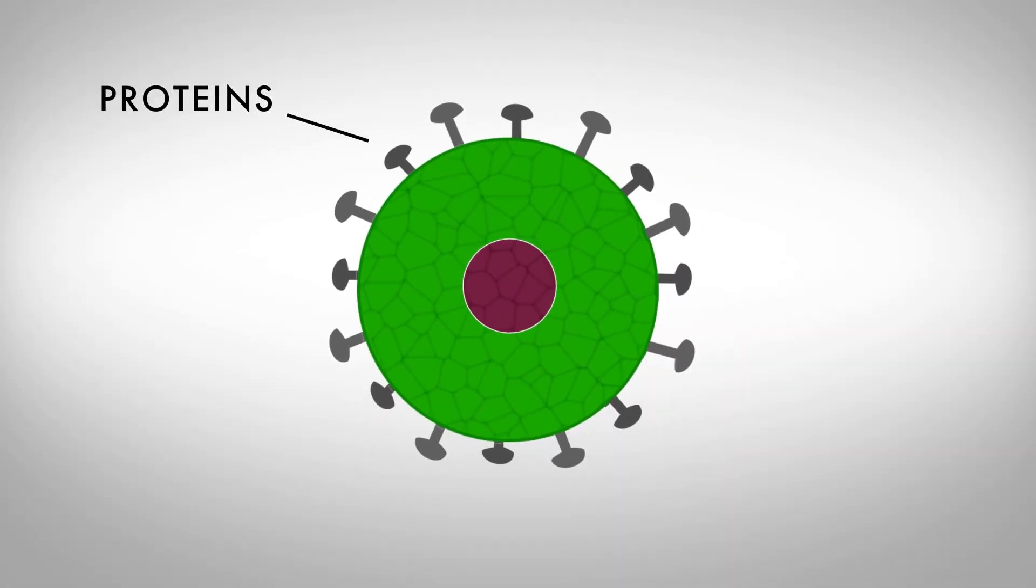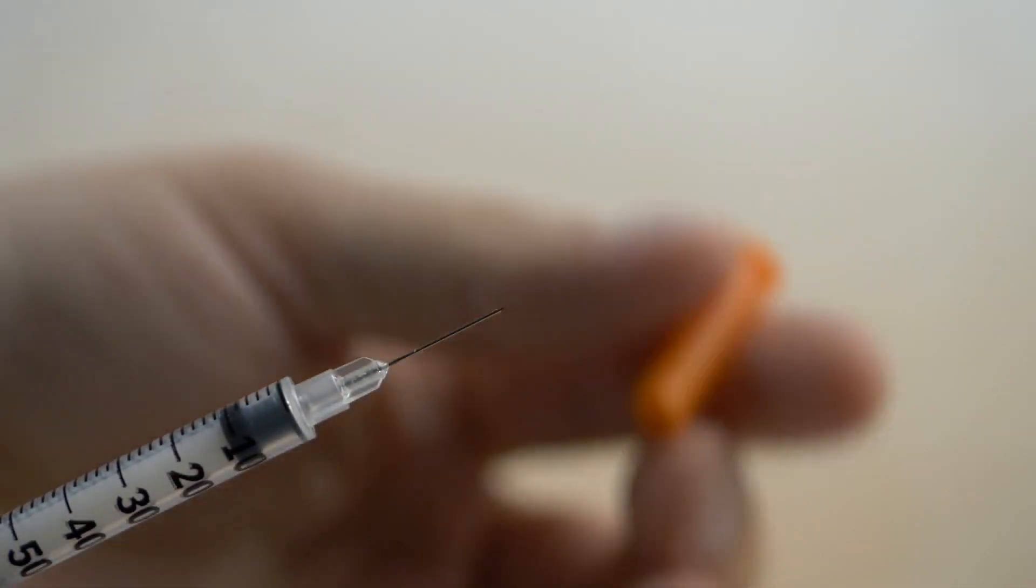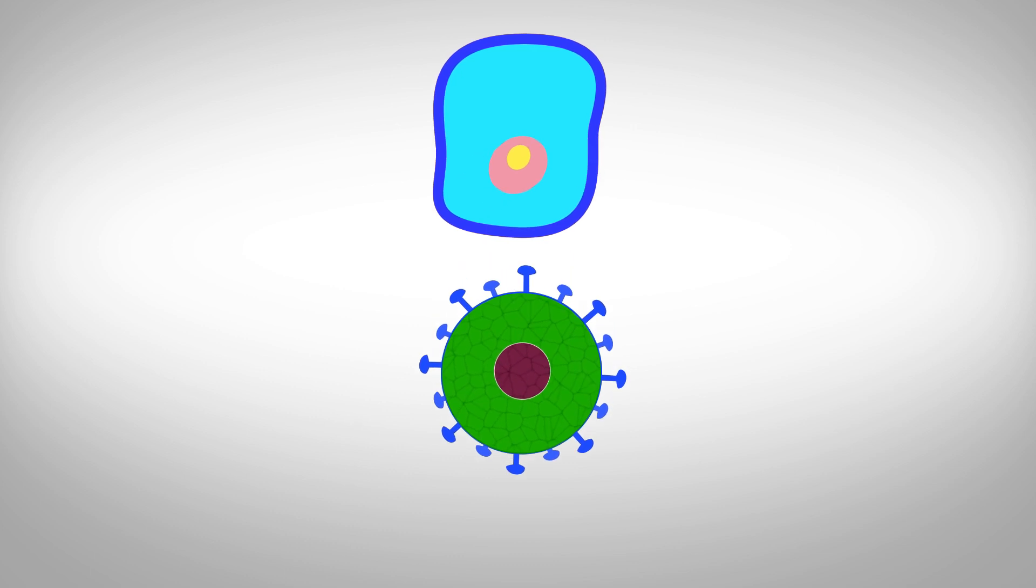Proteins are the little spiky parts on the coronavirus. They're scraped off and used as the base for the vaccine. When you are injected, your body learns how to fight off these proteins as opposed to having to fight off the whole virus. As a result, the virus can't enter your cells and get you sick.